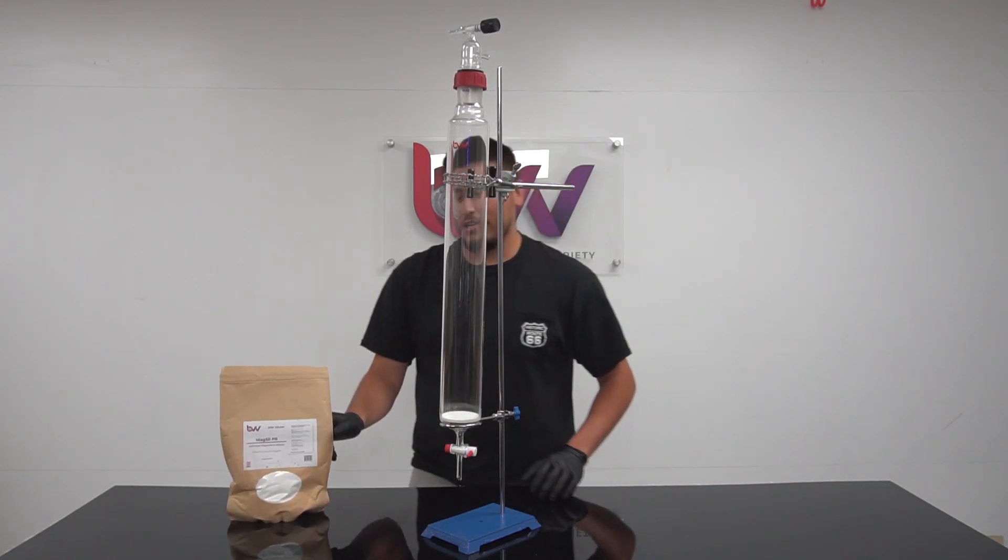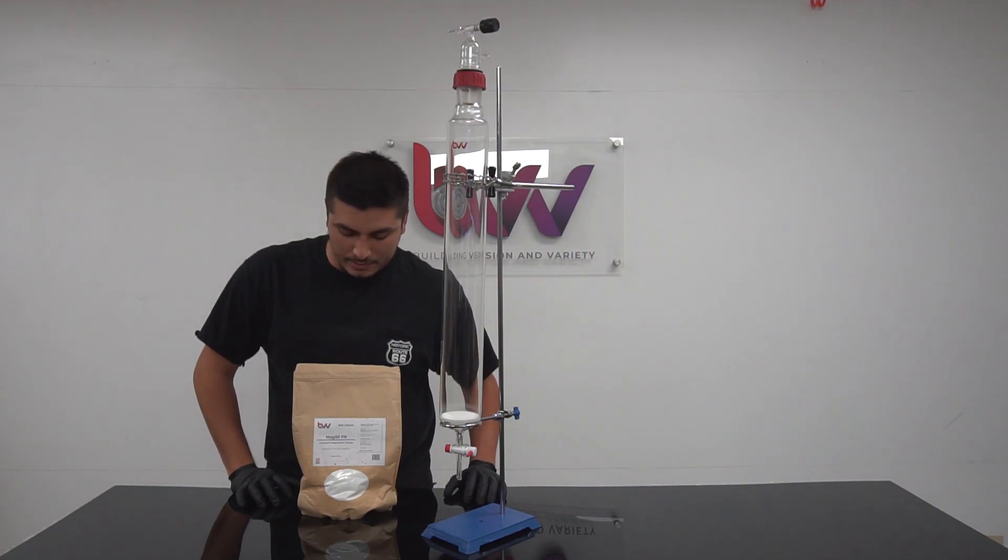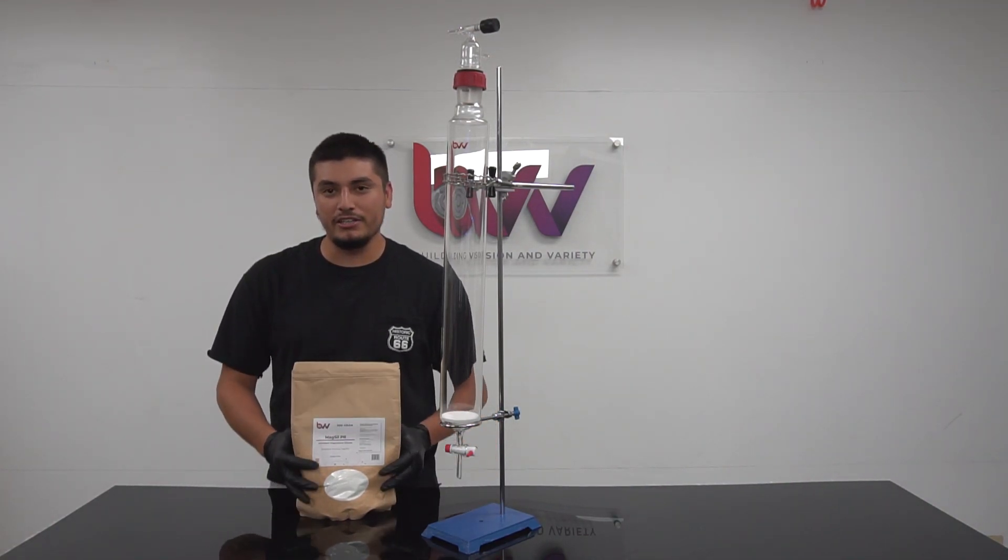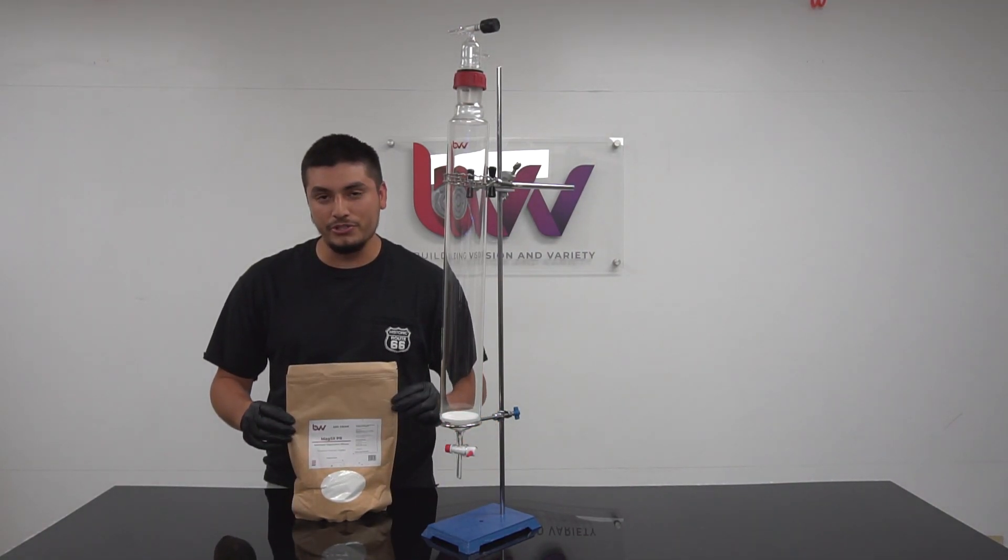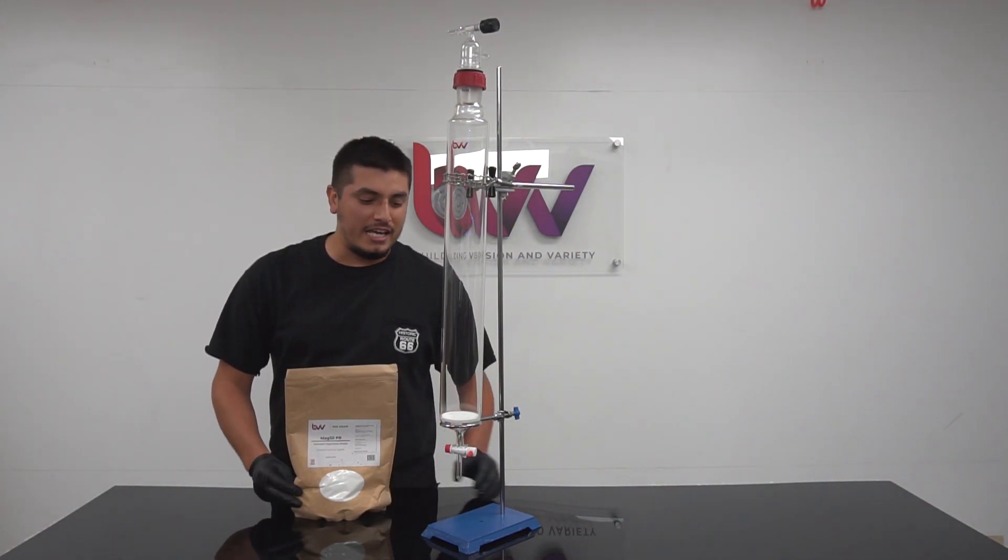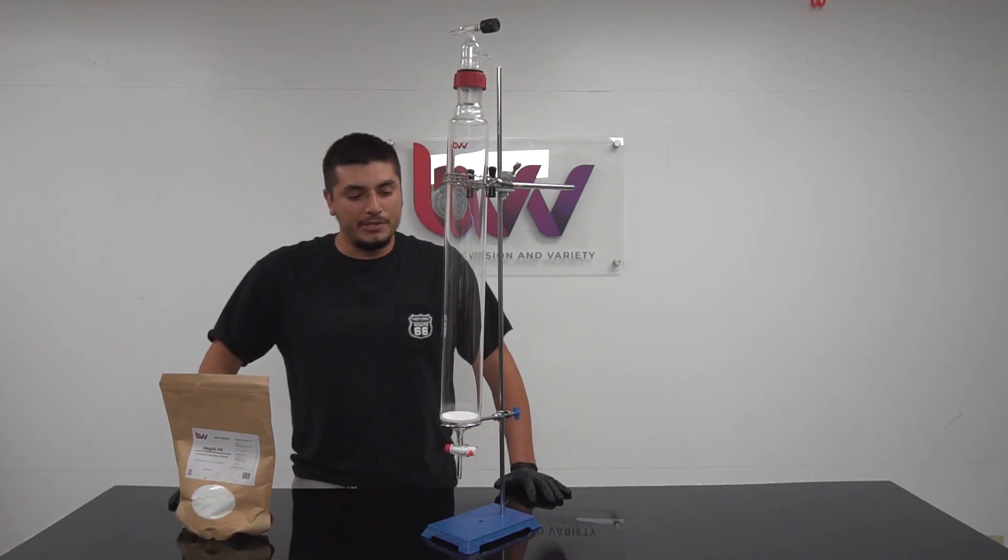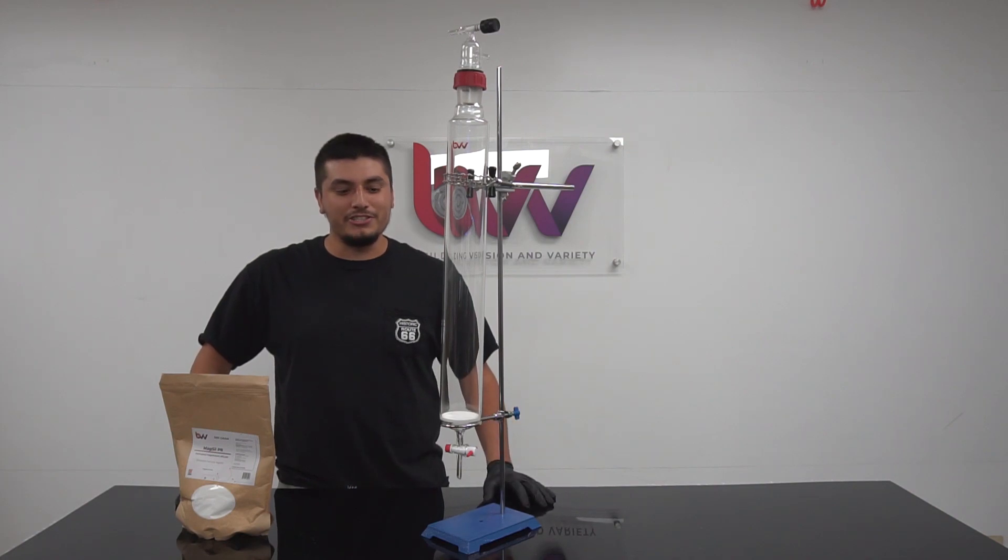One of the other products that our kit will come with or will be sold with is MagSyl PR. This is a product known from carbon chemistry, but we will also have our own product known as fluorosyl. That product can be used to wet pack the column and get it ready for any applications such as pesticide remediation.